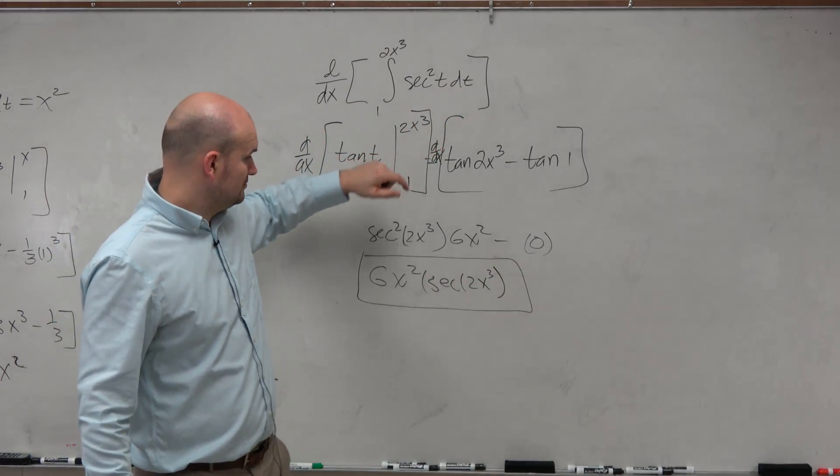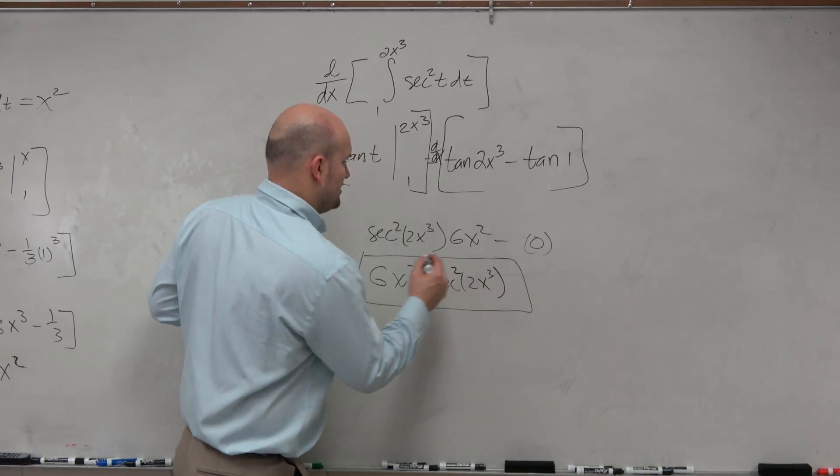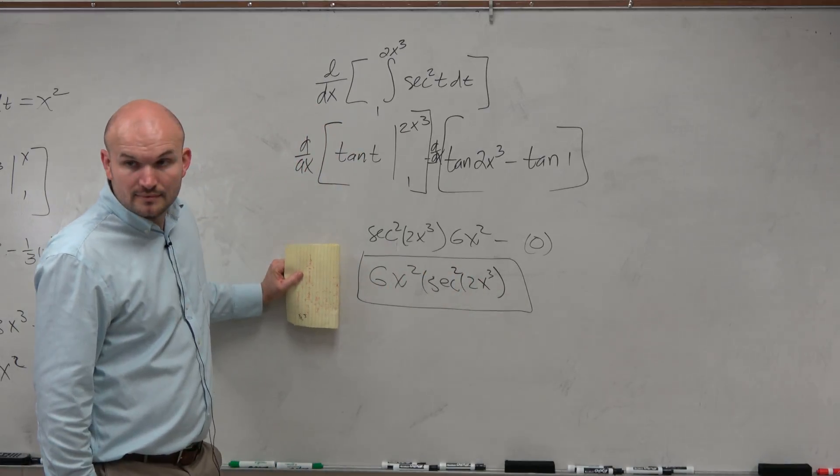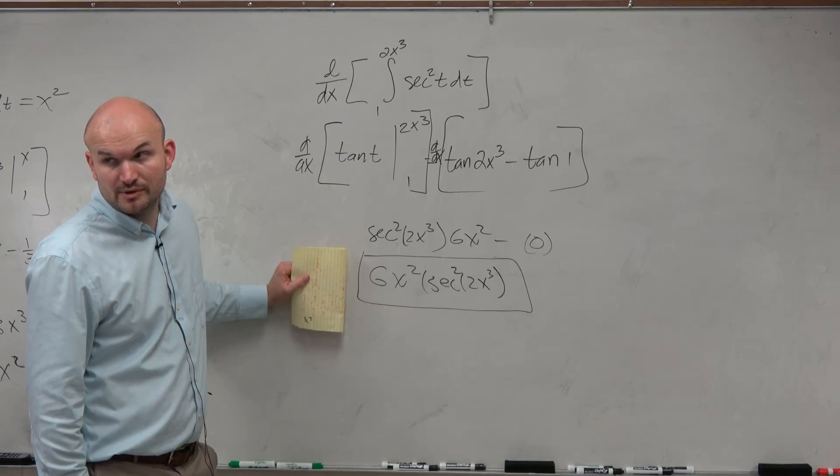So it is secant squared. It is secant squared. I just forgot to write it in there. OK? You guys see that? Now do you guys want to know how to do this quicker?